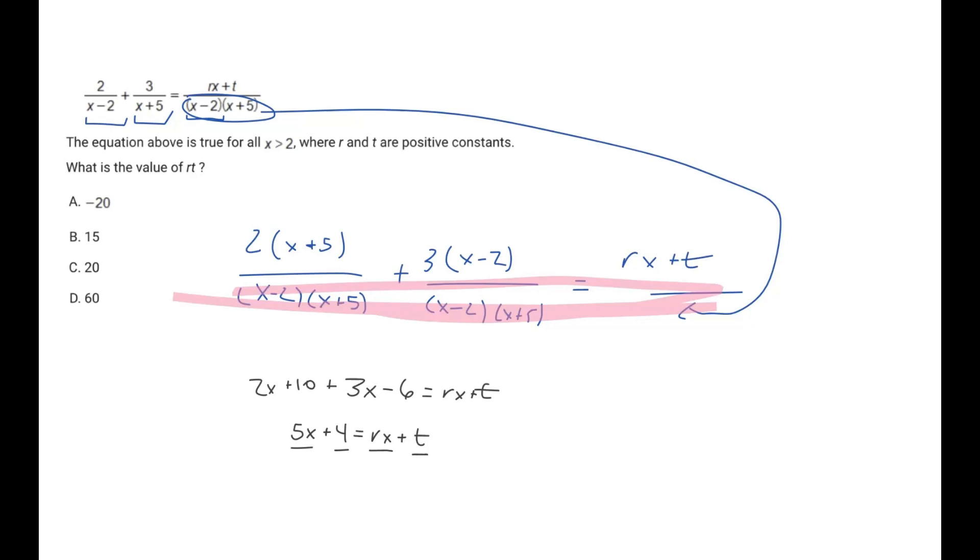So in our case, for r, we can just substitute in 5. So if r is 5, we get 5x, and if t is 4, we get 4. And that's kind of funny, because left side is 5x plus 4, right side is 5x plus 4. Those two are equivalent, and so we know r is 5, and t is 4.